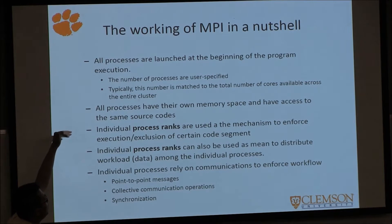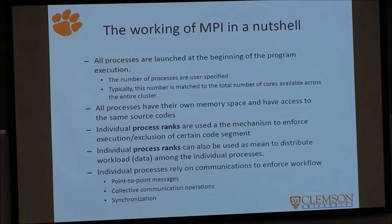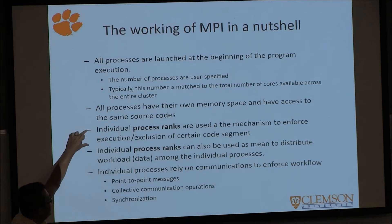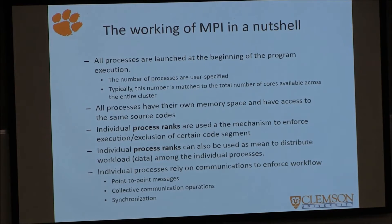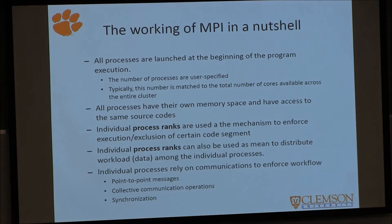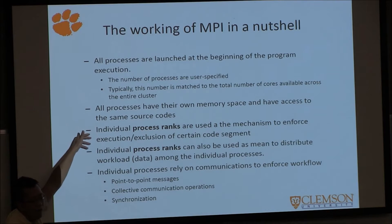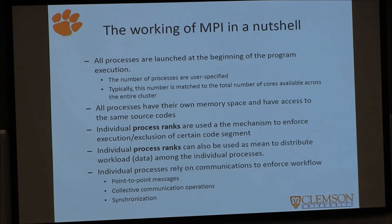All processes have their own memory space and they have access to the same source code. So each process can read the same source code. Individual process ranks are used as the mechanism to enforce execution and exclusion of certain code segments. For example, with 16 processes (ranked 0 to 15), you can use if-blocks: if rank is 0, do this; if rank is 1, do that. That's how you write MPI code to manage parallelism.